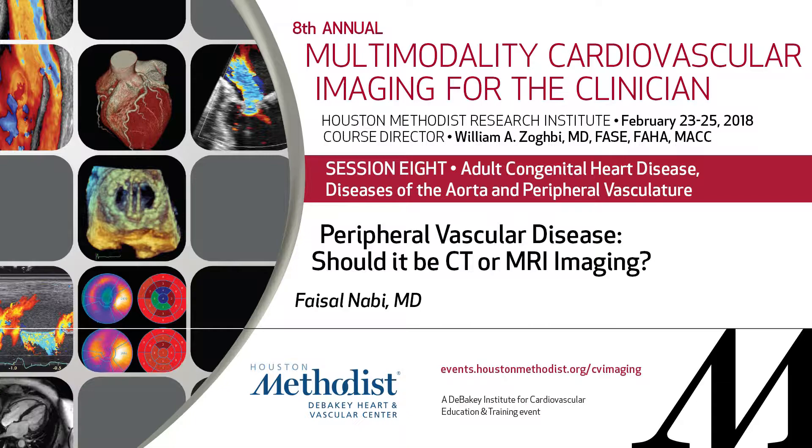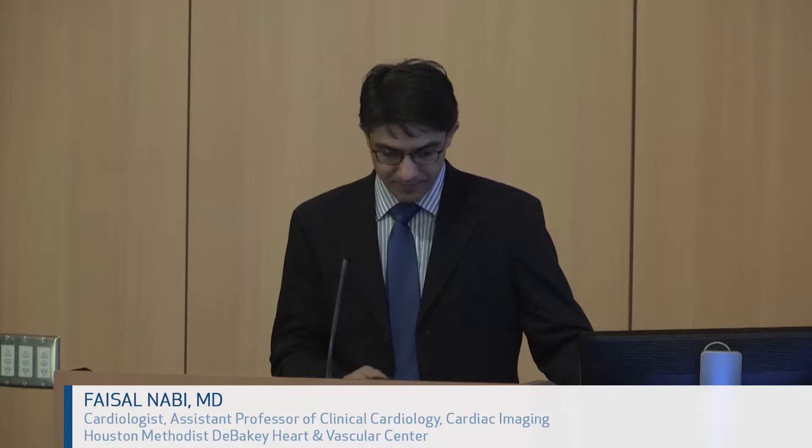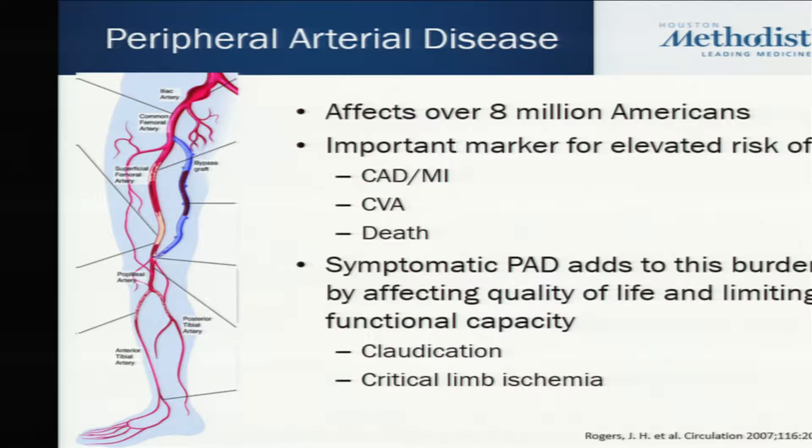My talk today is about peripheral arterial disease. We've heard some of the surgical approaches — how about how do we make a diagnosis? Peripheral arterial disease is obviously a condition that affects a significant portion of the U.S. population. If you have atherosclerosis in one vascular bed, it definitely puts you at risk for other atherosclerotic diseases such as coronary artery disease and stroke, and therefore is a risk factor for increasing mortality.